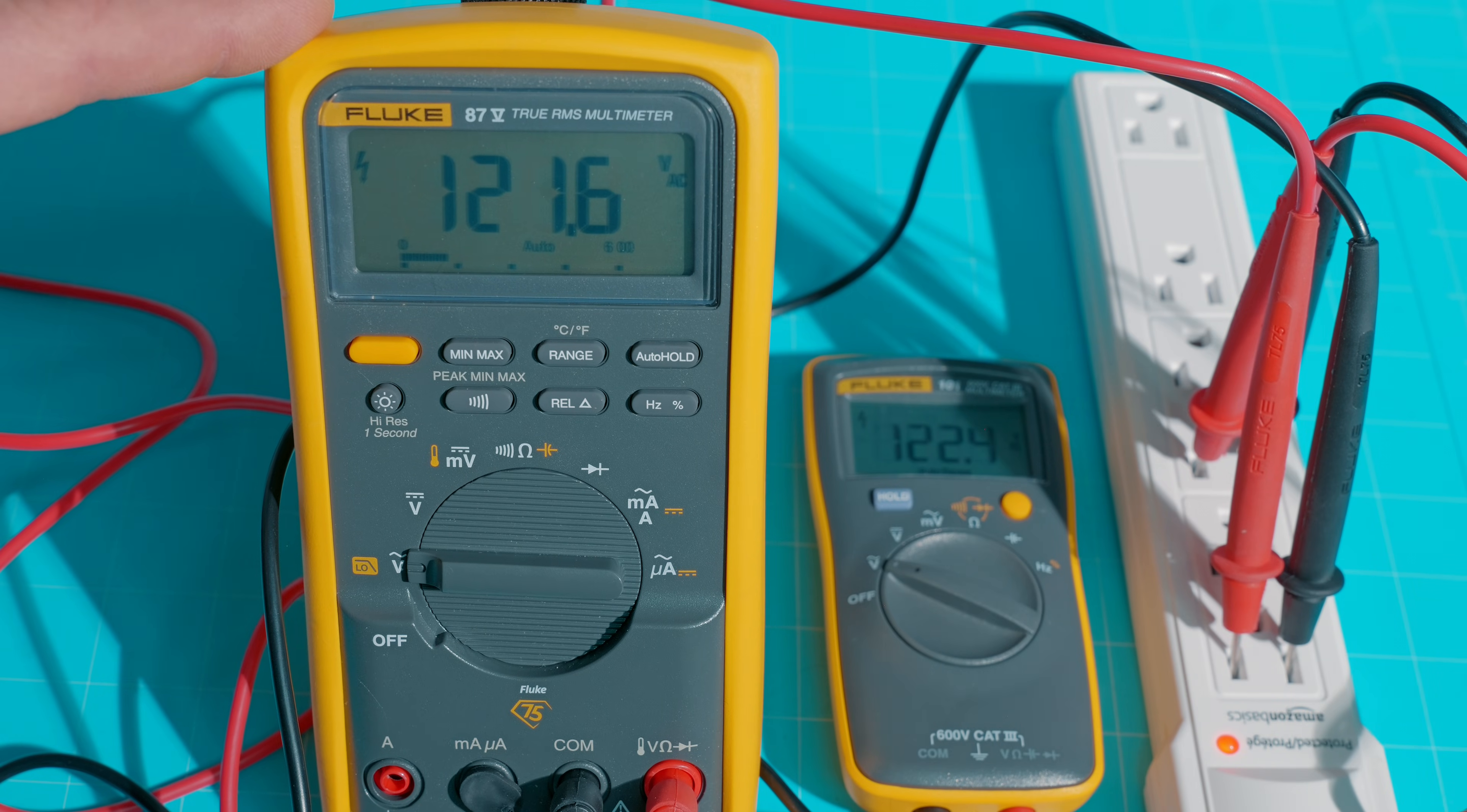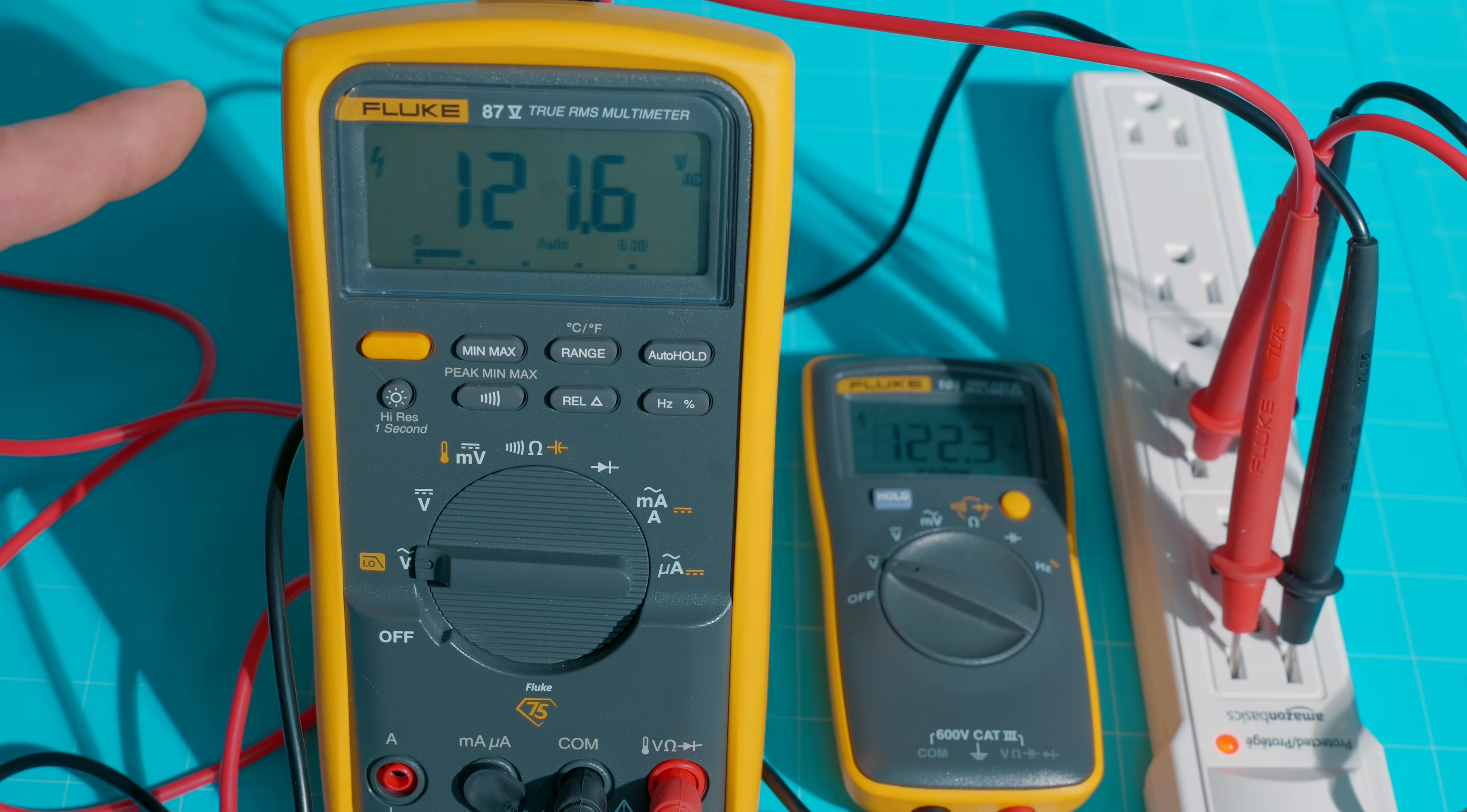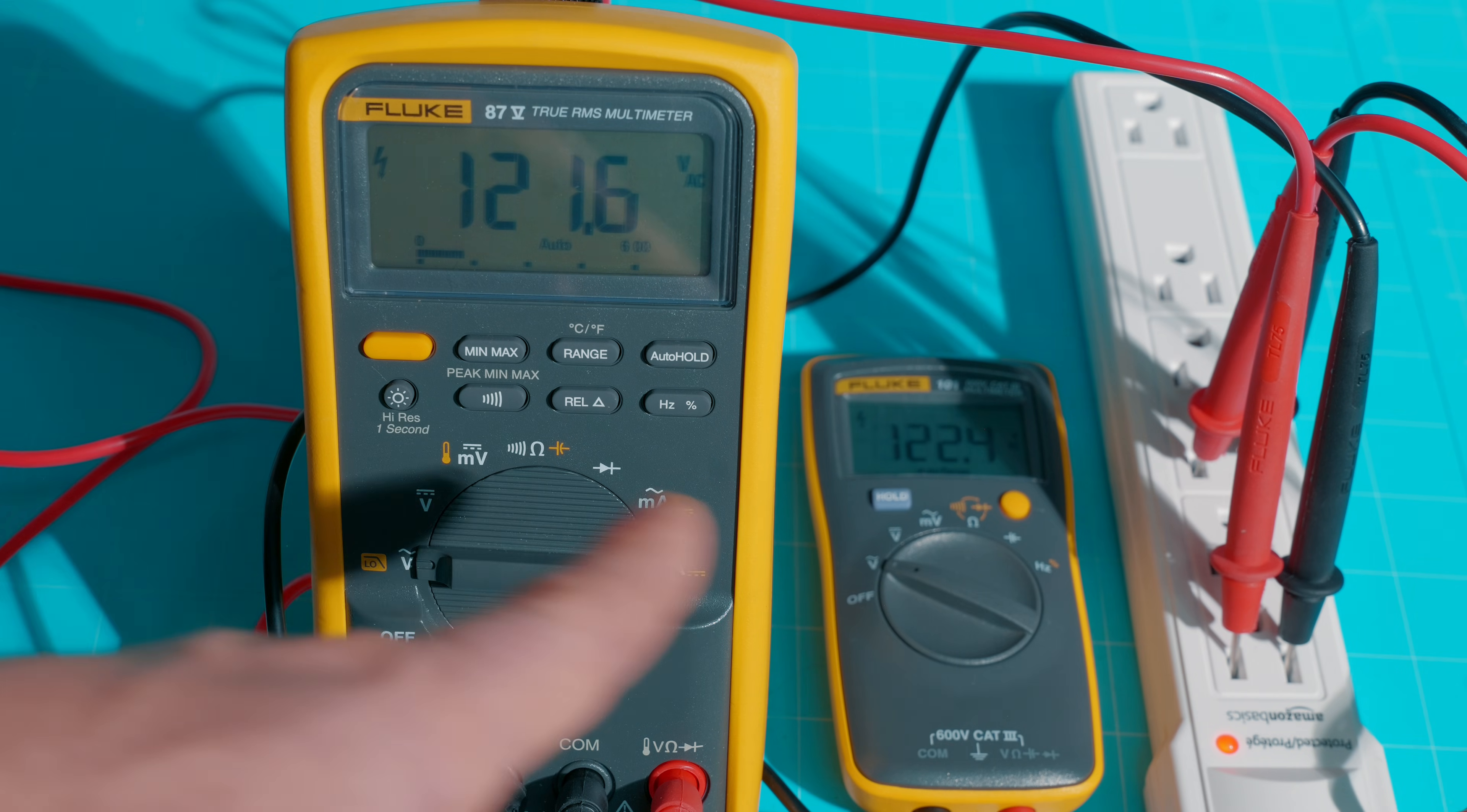As you can see, I broke out the Fluke 87V. Just to show you, there is a slight difference in voltage at 121.6 compared to the 122.3 and 4 on the Fluke 101. Now, this is a slight difference in voltage. This is probably a little bit more accurate. But for all intents and purposes of doing projects and small electrical work around your house, the 101 is going to do the job. But I just did want to show you there is a slight difference between the two models.